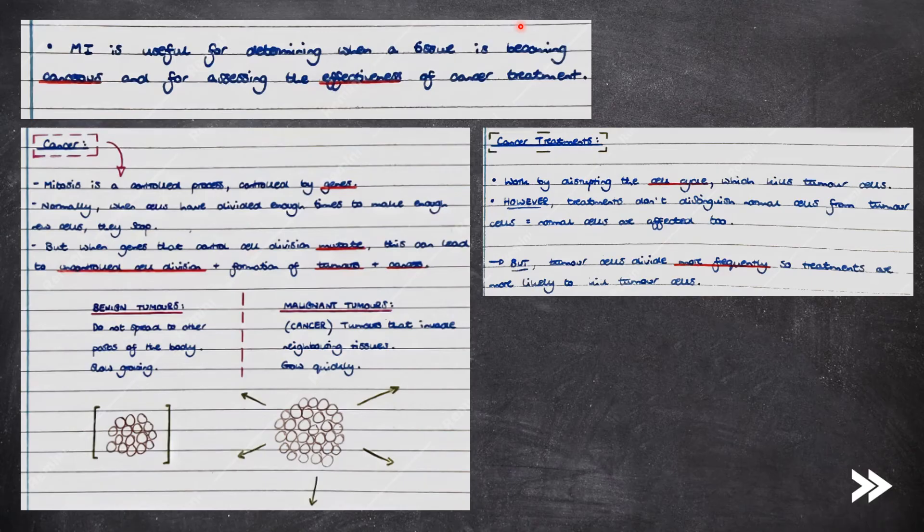So, how does cancer arise? Mitosis is usually a controlled process controlled by genes. Normally, when cells have divided enough times to make enough new cells, they stop. But when genes that control cell division mutate, this can lead to uncontrolled cell division and the formation of tumours and cancers.